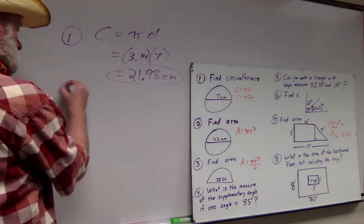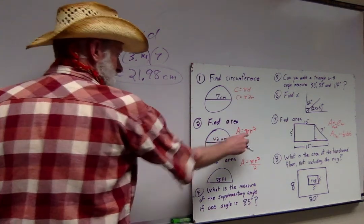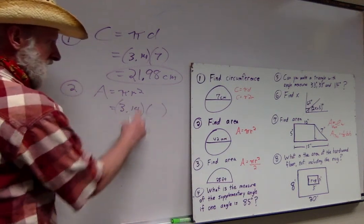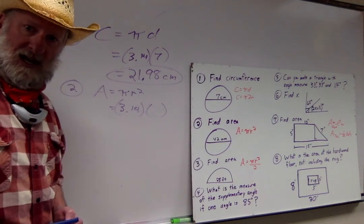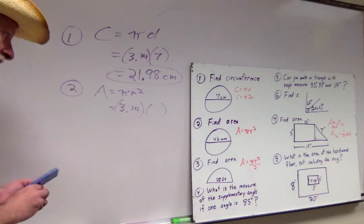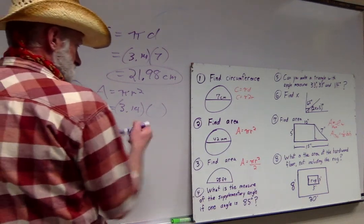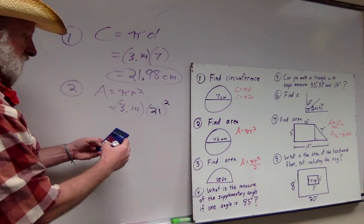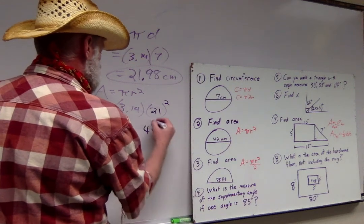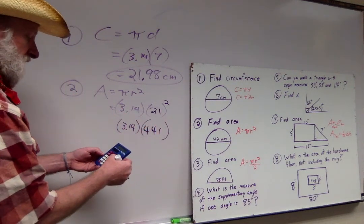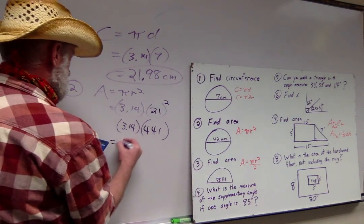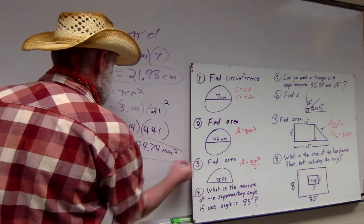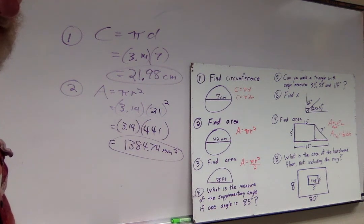Number two, we have to find the area. Area equals pi times the radius squared. Pi is 3.14. They didn't give me the radius, they gave me the diameter. If the diameter is 42, that means the radius has to be 21. So I plug in my 21, and don't forget it has to be squared. 21 times 21 is 441. Multiply that by pi times 3.14, and I get 1,384.74 millimeters squared, because that's how many little millimeter squares can fit inside that circle.